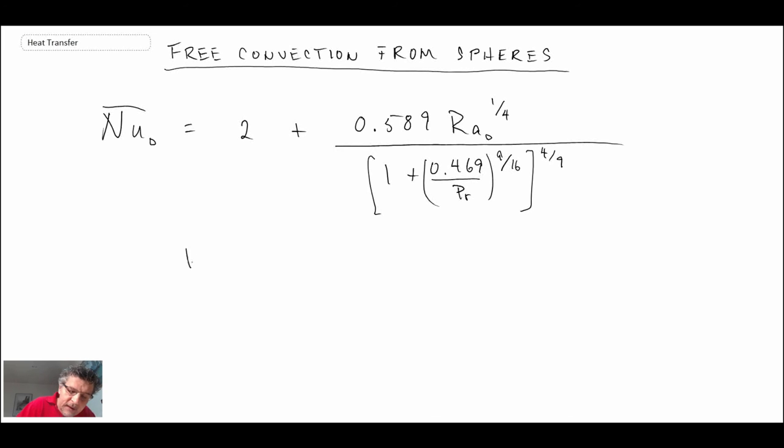So there's the correlation. And this applies for Rayleigh number based on diameter, less than or equal to 10 to the 11. So not exactly the 10 to the 9 that we saw for the vertical flat plate. And Prandtl number, 0.7 and above. So anything above 0.7. And you'll notice, the reason why I say that this is similar to the laminar is because we have the power of the 1/4th on the Rayleigh number. And that was what we saw for the vertical plate.